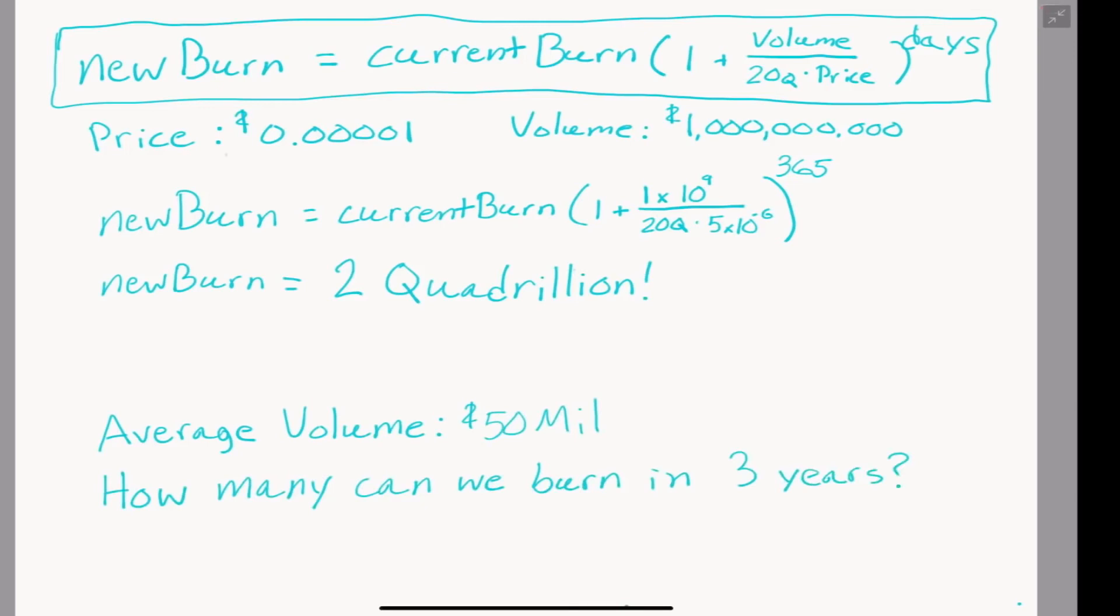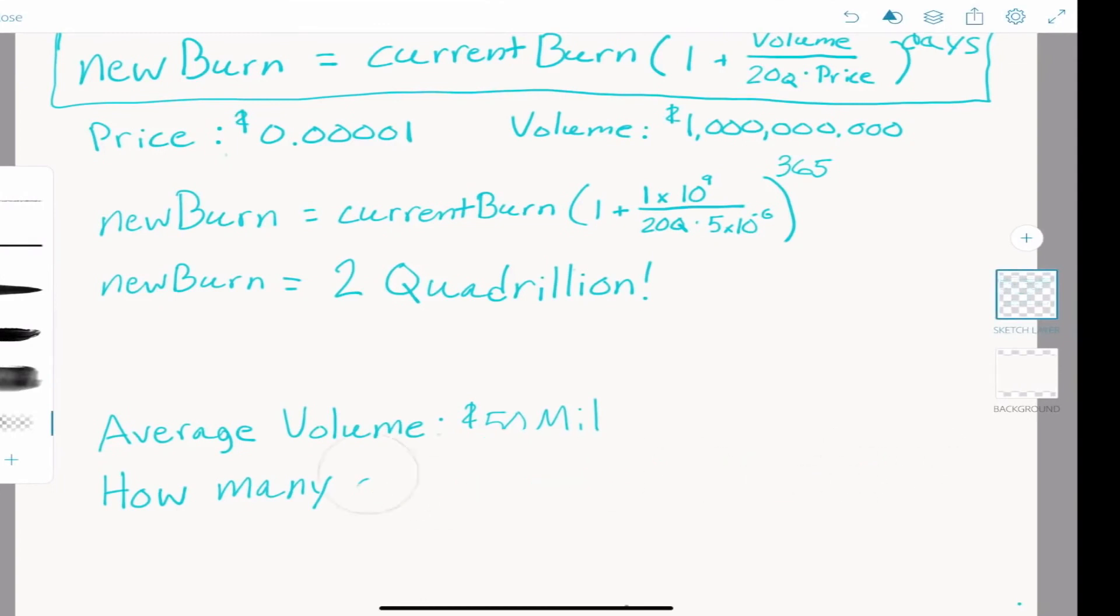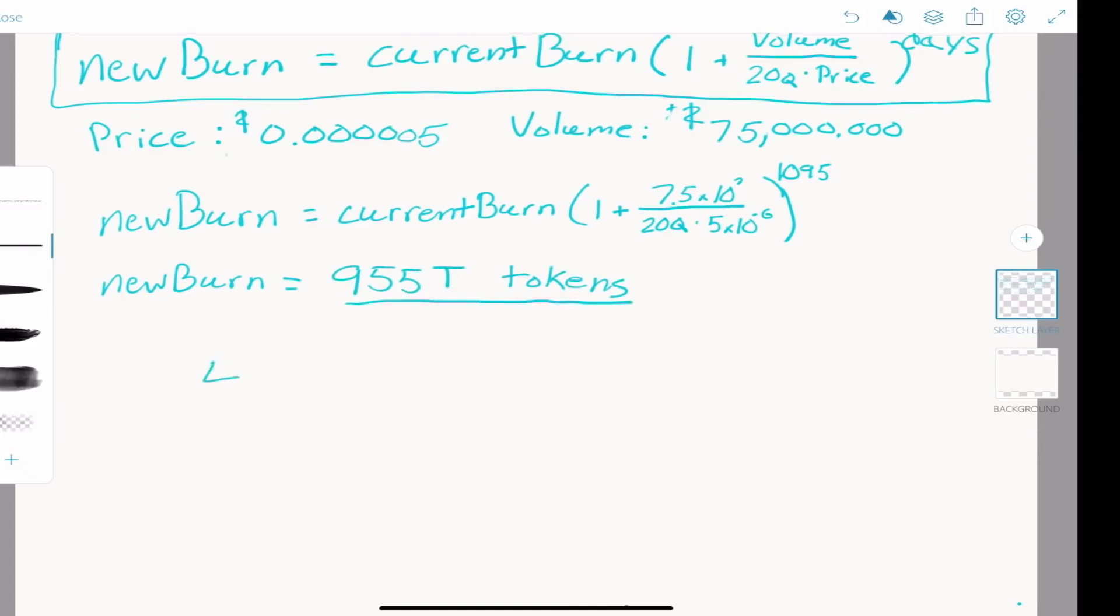Let's assume the worst case. Let's assume the exchange, the debit card, everything barely raised the volume at all—maybe it'll raise it up to $75 million. If we keep our price of 0.0000005, our equation says in three years the burn wallet will own 955 trillion tokens, leaving 45 trillion left. Even if we do not gain market cap at all and our valuation stays the same, our price would be 0.0009.